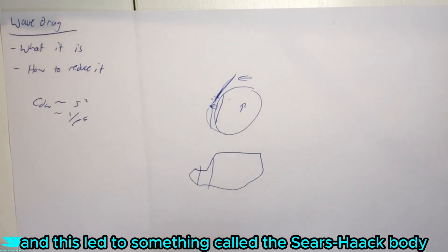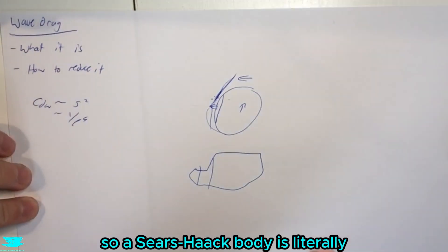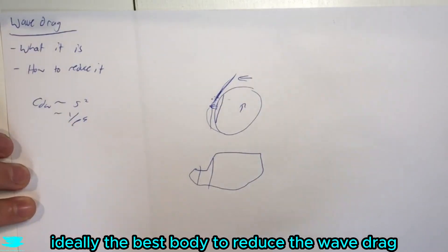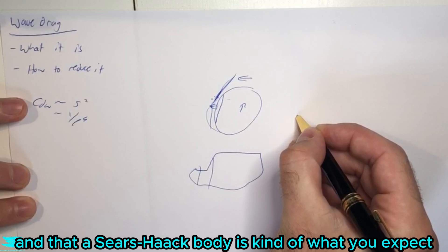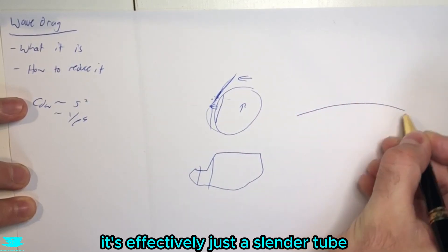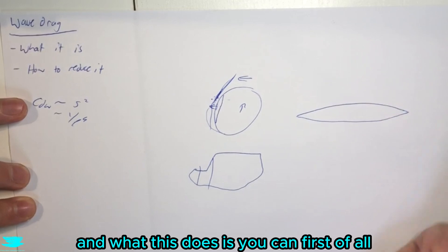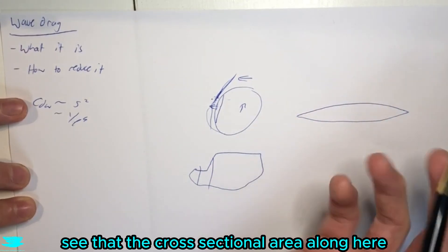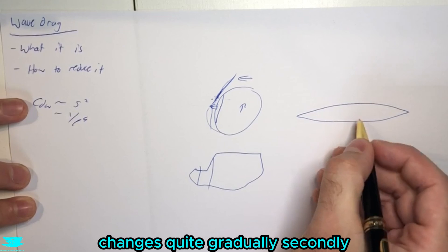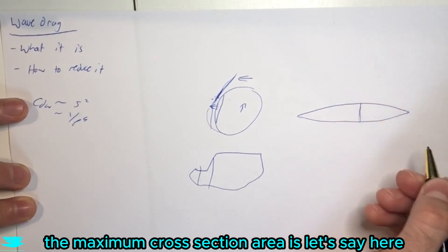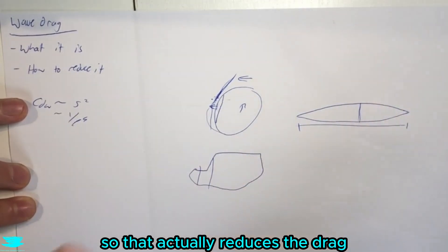And this led to something called the Sears-Haack body. So the Sears-Haack body is literally, ideally the best body to reduce the wave drag based on Common-Mohr theory. And that Sears-Haack body is kind of what you'd expect. It's effectively just a slender tube. So it looks like this. And what this does is you can first of all see that the cross-sectional area along here changes quite gradually. Secondly, the maximum cross-sectional area is, let's say here, but the length is very long too. So that actually reduces the drag.